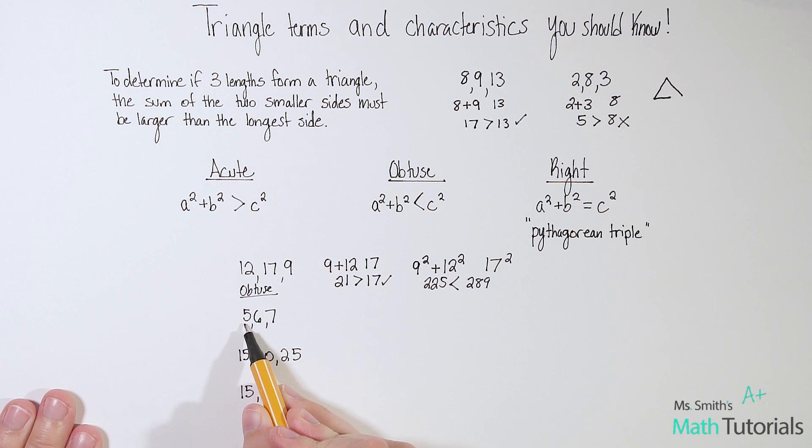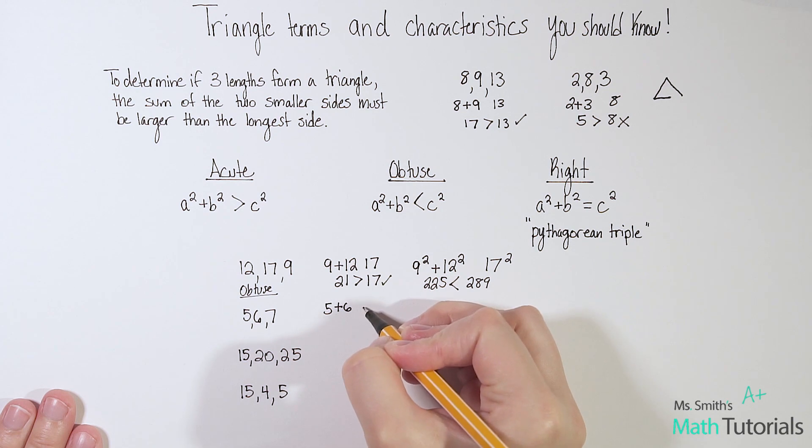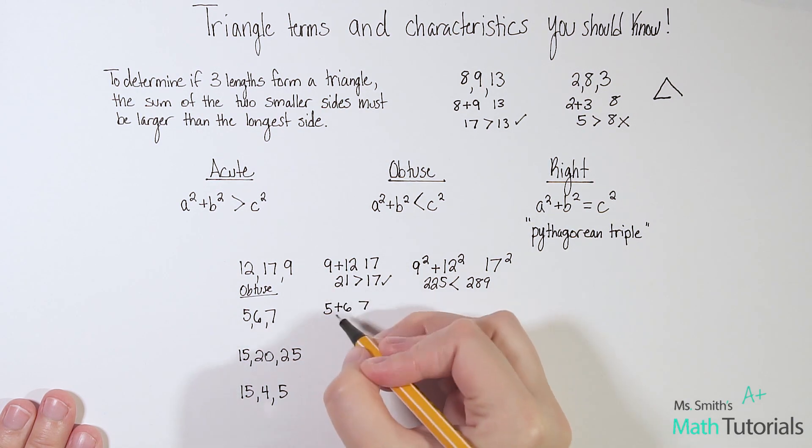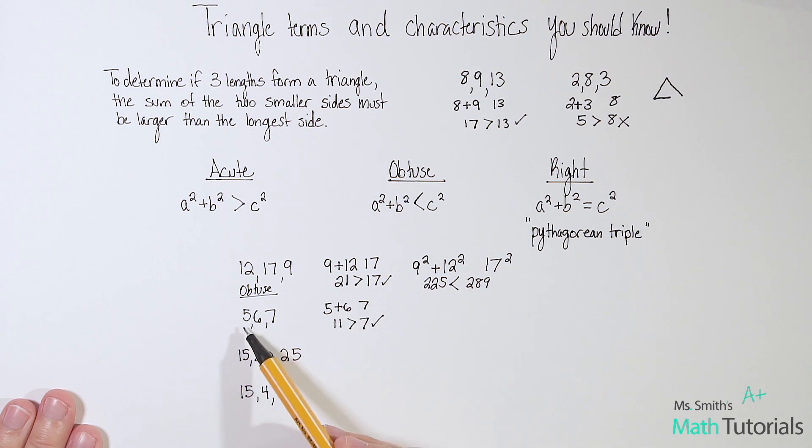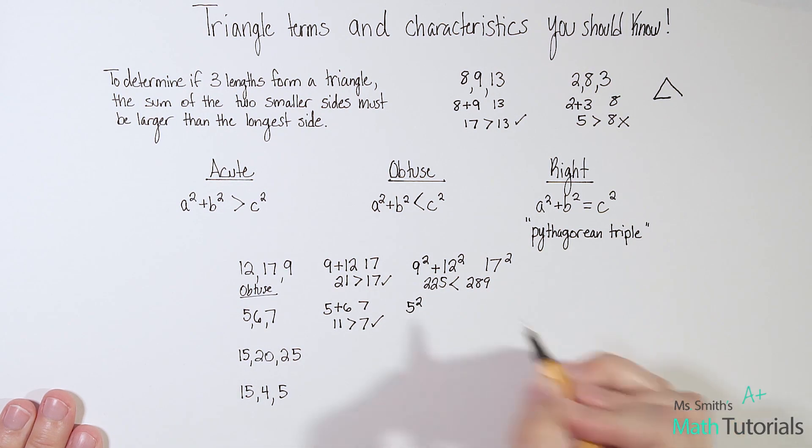Let's look at this one. So first, let's determine, is this even a triangle? We got to take our two smallest sides, 5 plus 6. And is that greater than 7? Well, 5 plus 6, we know is 11. And 11 is greater than 7. Yes. So far, so good. It is a triangle. Now we need to figure out which kind. So let's plug in our shortest side, a squared, 5 squared, plus this next shortest side, 6 squared. This will be our b squared.